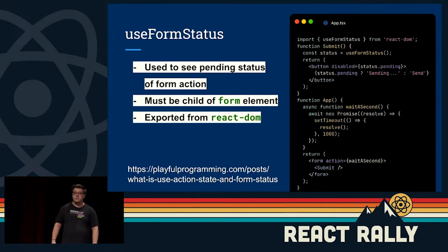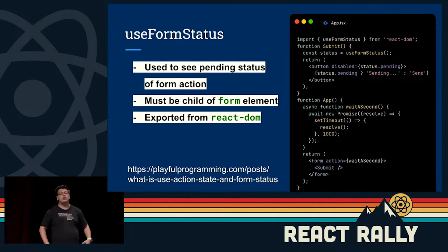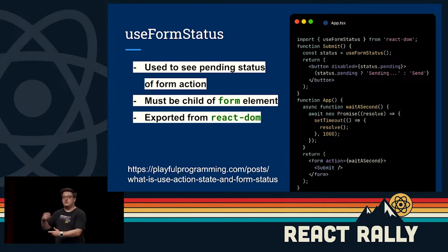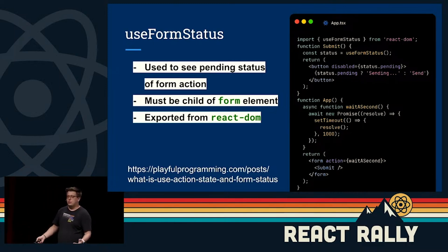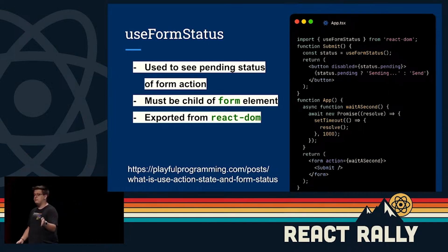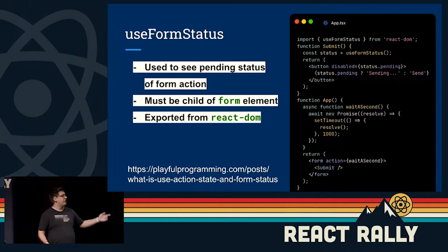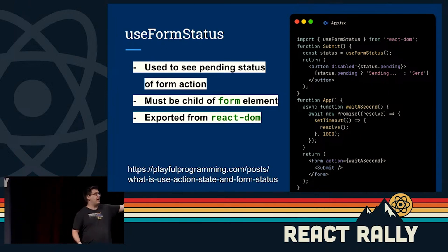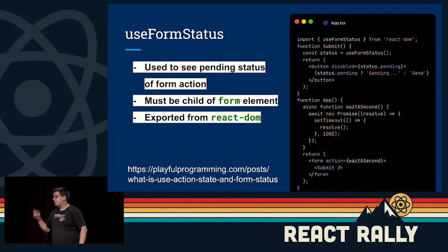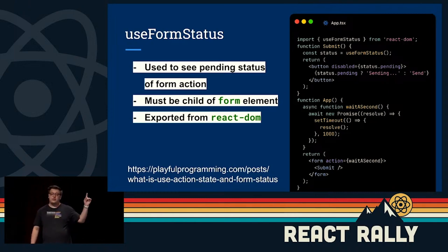There's also useFormStatus. You might want to know when you are submitting something — like if you have a delay. How do you display that to the user? useFormStatus allows you to see when you are moving forward and taking an action. It must be a child of the form element, so you can't just have useFormStatus in the app component — you have to have it as the submit button. Also worth noting: this is being exported from React DOM, not React itself.